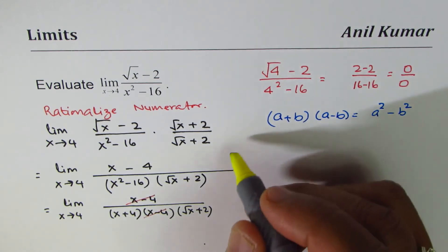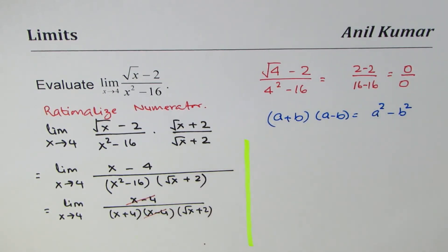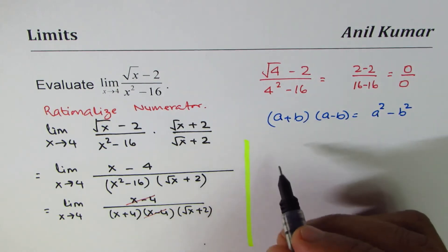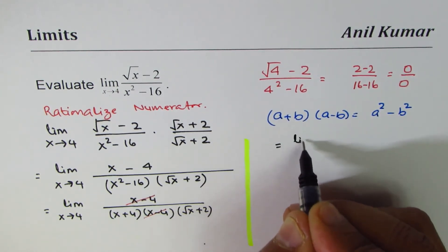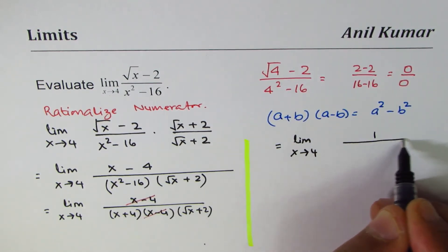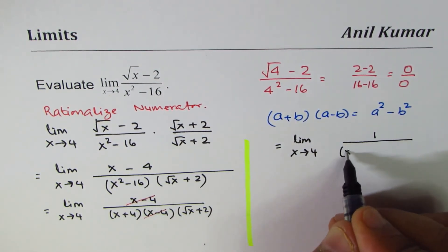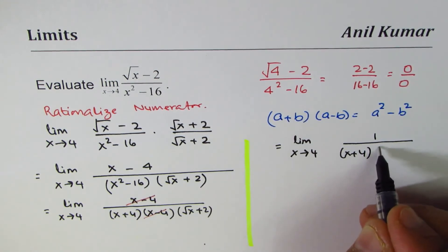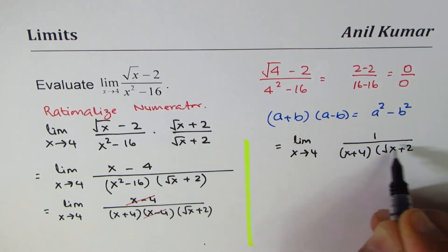So that gives us, this is equal to limit x approaches 4, and we have 1 over x plus 4 times square root of x plus 2.